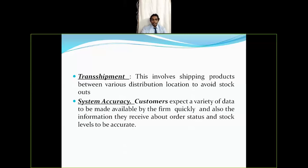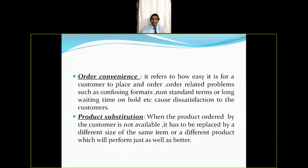System accuracy means customers expect a variety of data to be made available quickly, and the information they receive about order status and stock levels must be accurate. The customer has to be kept informed regarding the details of their order — that is what system accuracy means.